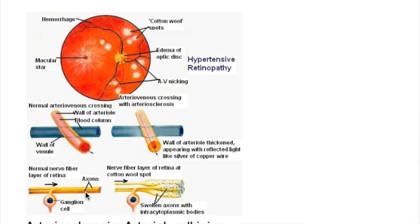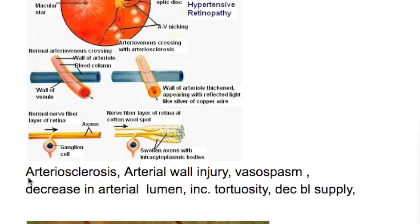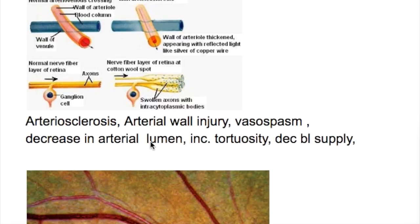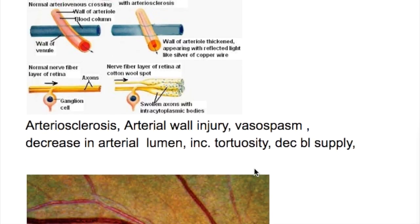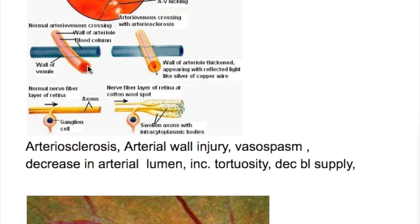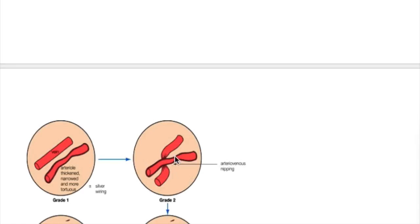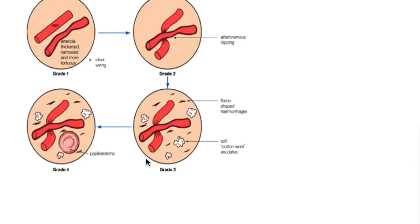In hypertensive retinopathy, because of arteriosclerosis there is arterial wall injury, vasospasm, and a decrease in the arterial lumen, increased tortuosity and decreased blood supply. This is the normal one — the lumen is normal — but because of arteriosclerosis and hypertension the lumen gets narrowed, and then there is a directional change of the arteriole.